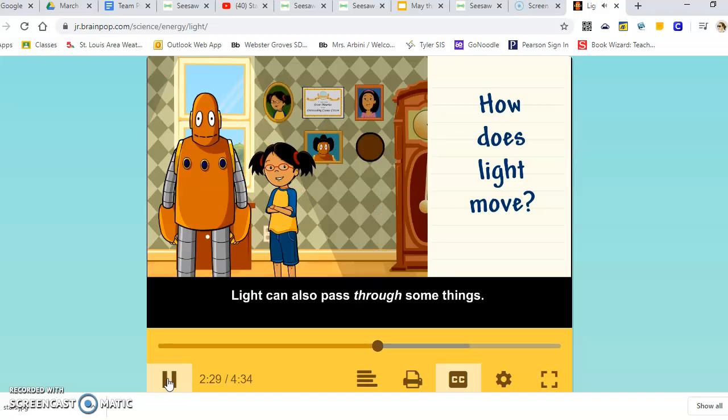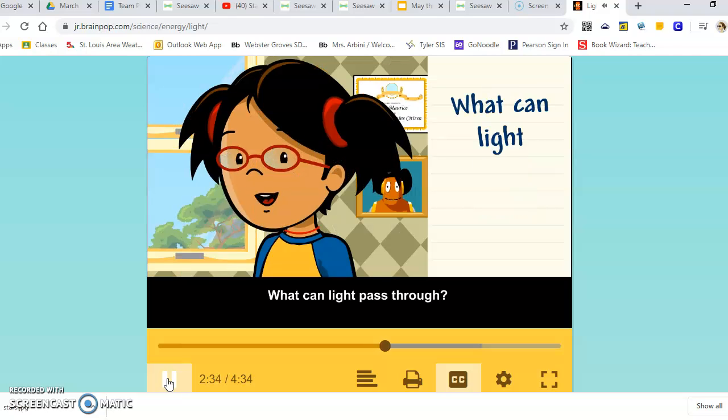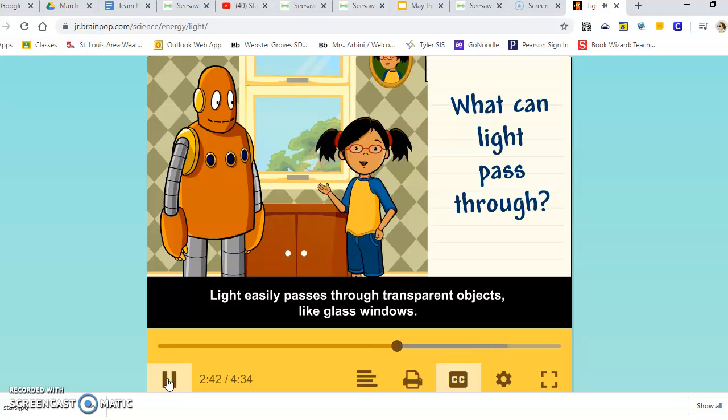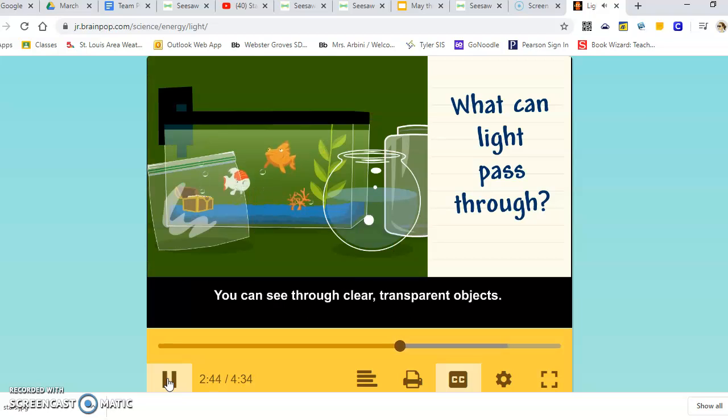Light can also pass through some things. Light easily passes through transparent objects, like glass windows. You can see through clear, transparent objects.